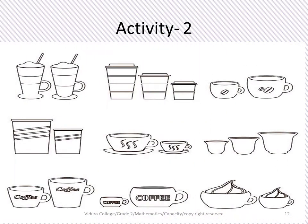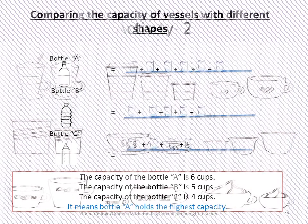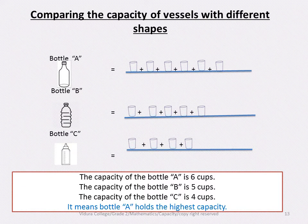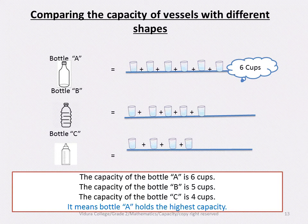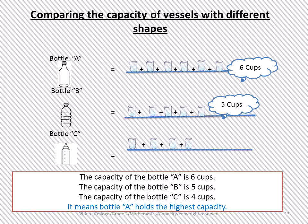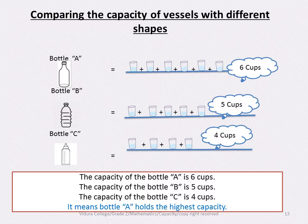Activity two: comparing the capacity of vessels with different shapes. The capacity of bottle A is six cups. The capacity of bottle B is five cups. The capacity of bottle C is four cups. It means bottle A holds the highest capacity.